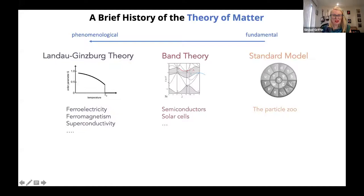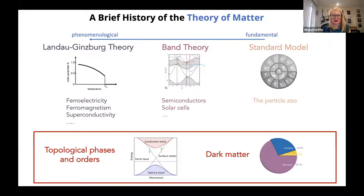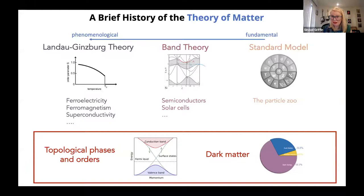However, two big things are thorns in our side. First is the discovery and prediction of topological phases of matter that couldn't be described using band theory or Landau-Ginzburg theory. The second is dark matter — hypothesized with a lot of indirect evidence. These are not explained within the state-of-the-art theory of matter. Today I'll discuss how we can use materials informatics to probe these fundamental materials issues: new ideas for dark matter detection, and designing new topological phases.